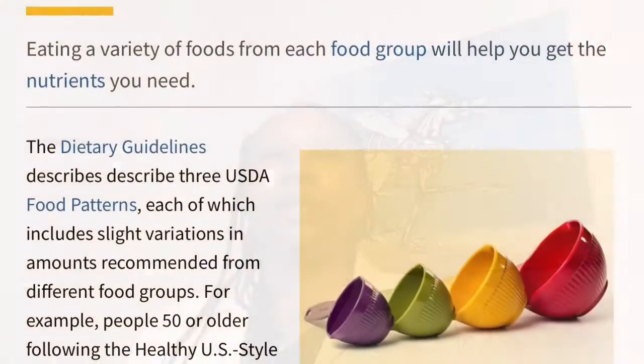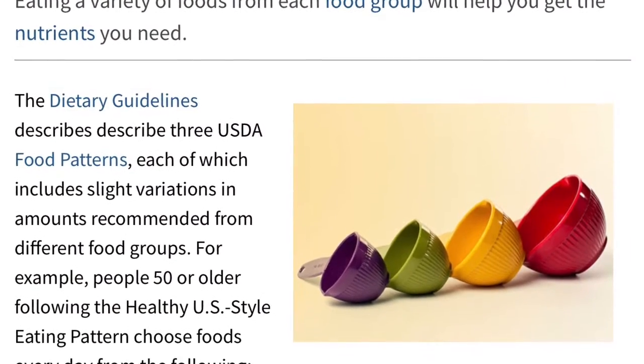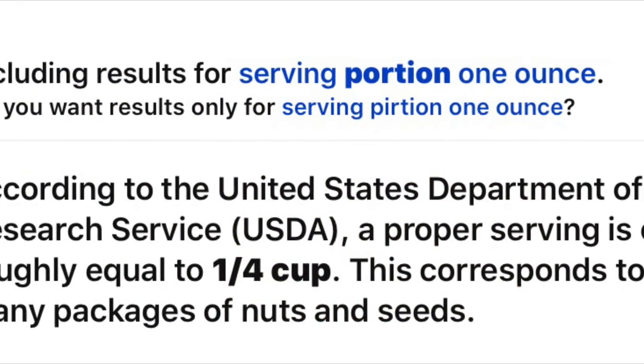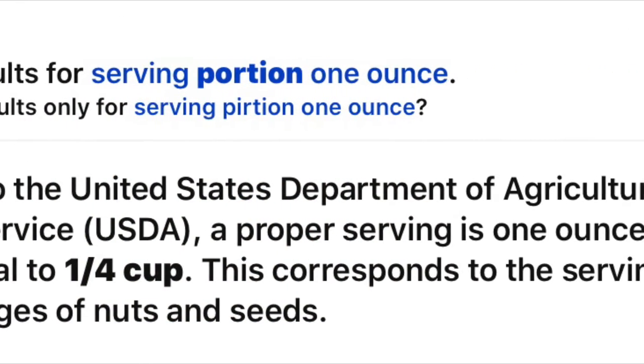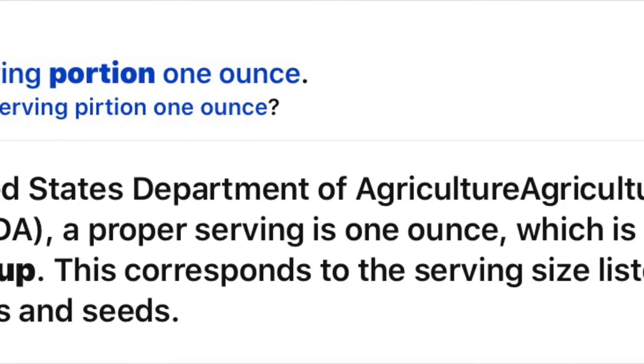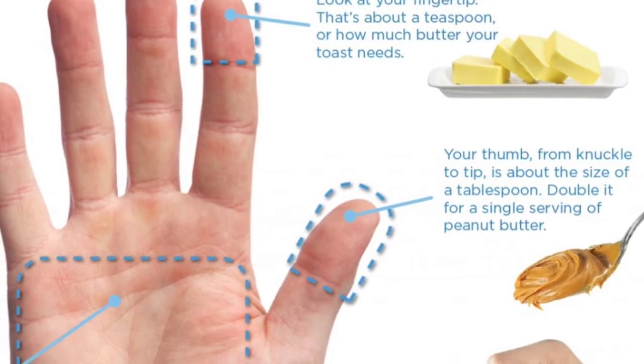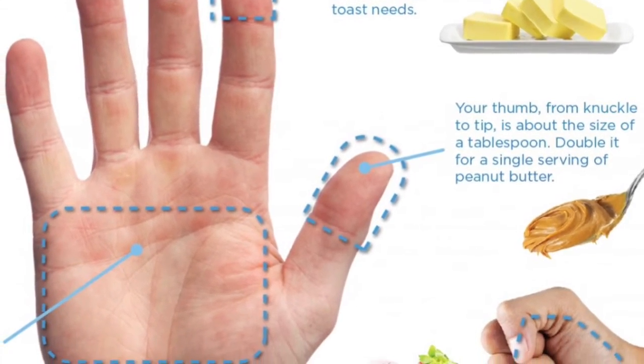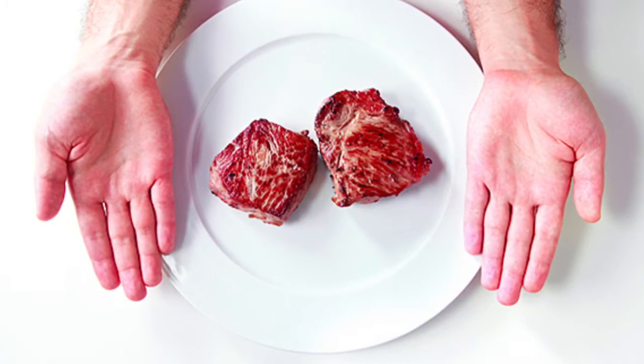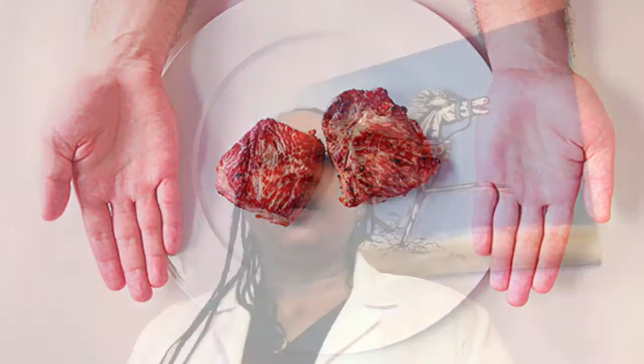We need to control our sugar intake, and we need to watch our portion sizes. Read the label. When it says one serving equals X amount of calories, what is a serving? It's usually not the amount we put on our plate — it's usually a lot less.